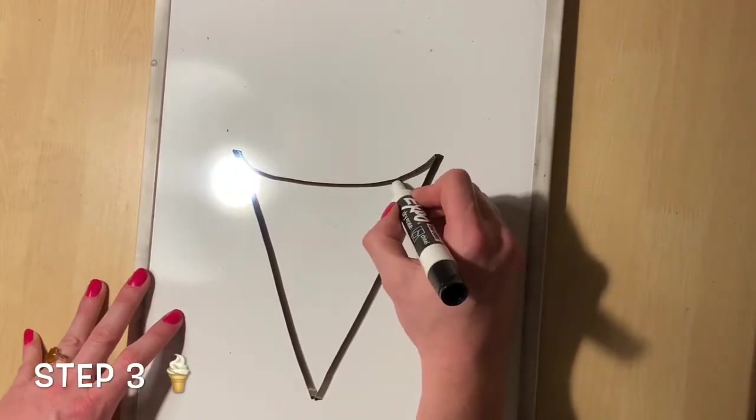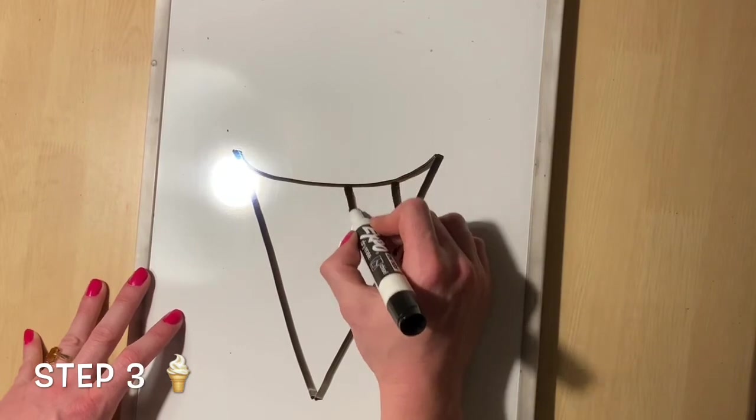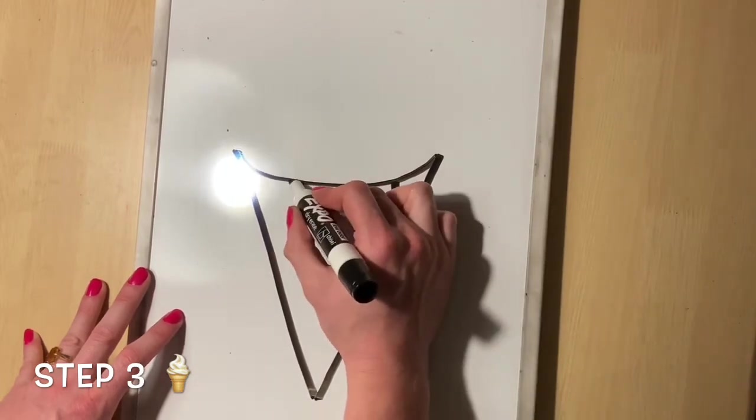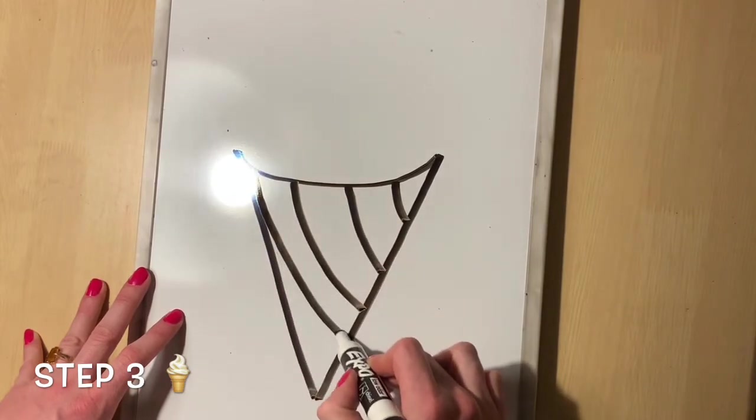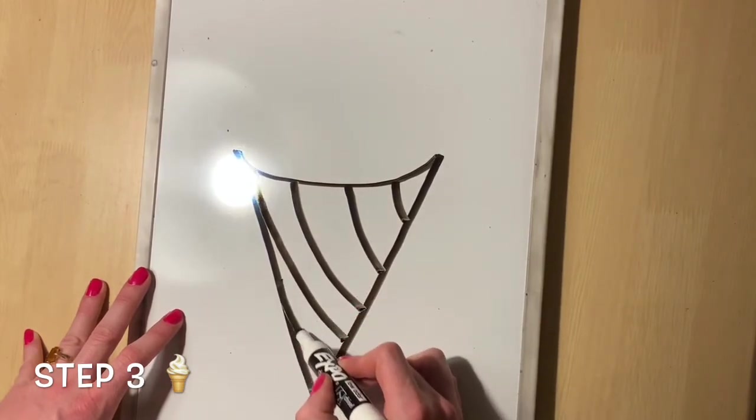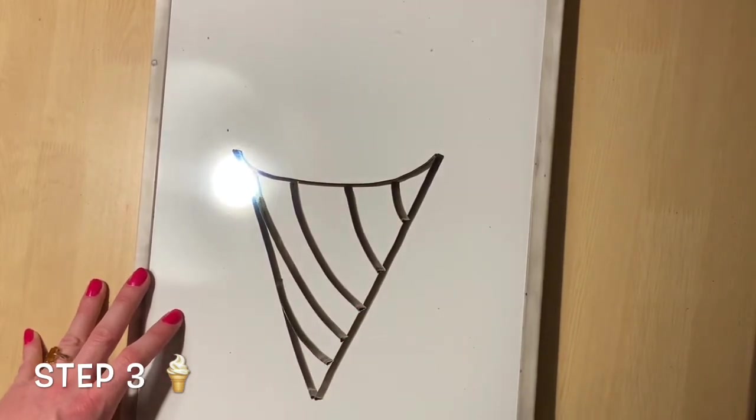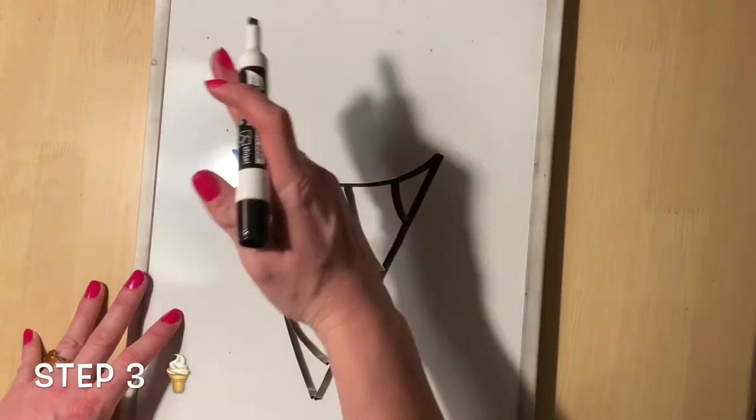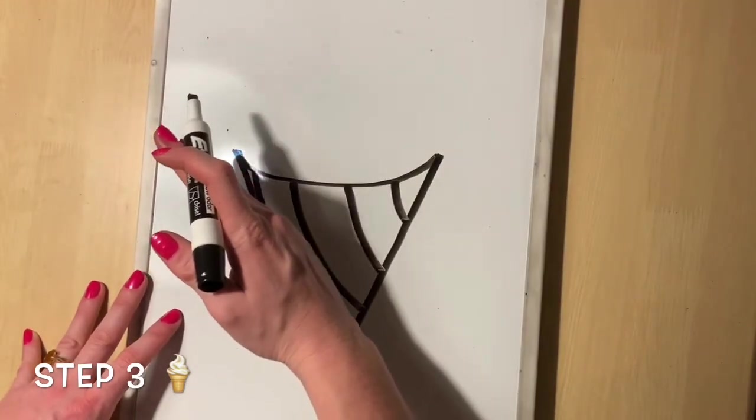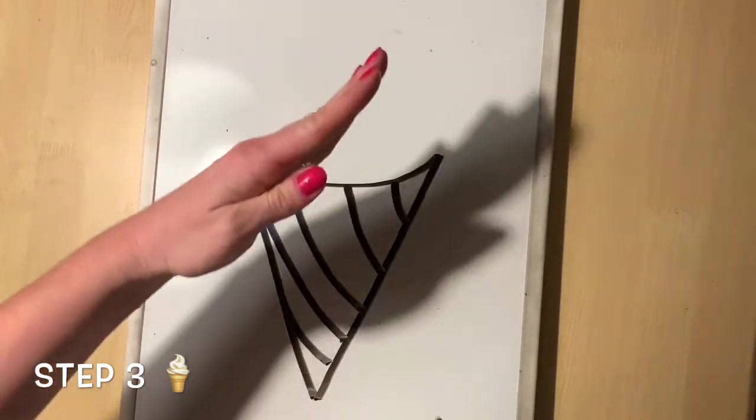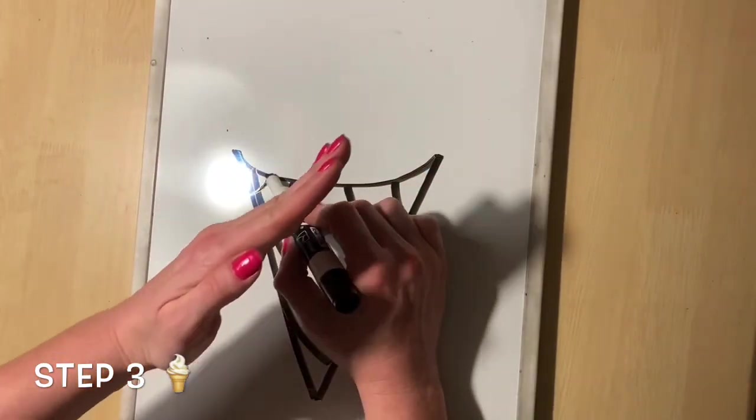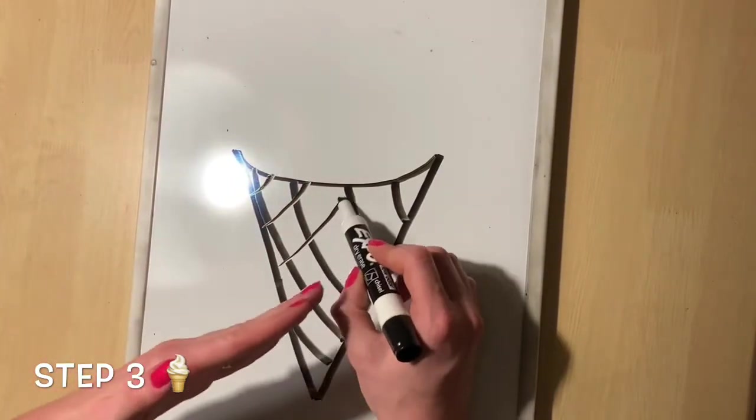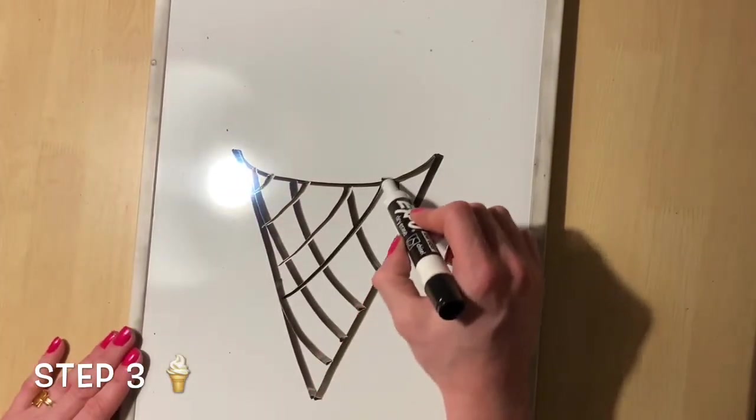And next we need to add the cone's waffle texture. So we are going to go in one direction with some curved lines and then we are going to crisscross those lines in a different direction. So my first lines went one way. My second set of lines need to be curved and go the opposite direction to create the crisscross.